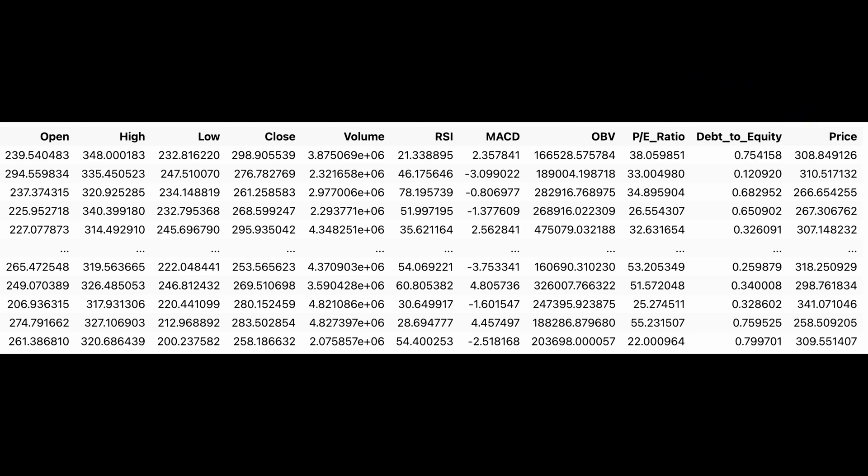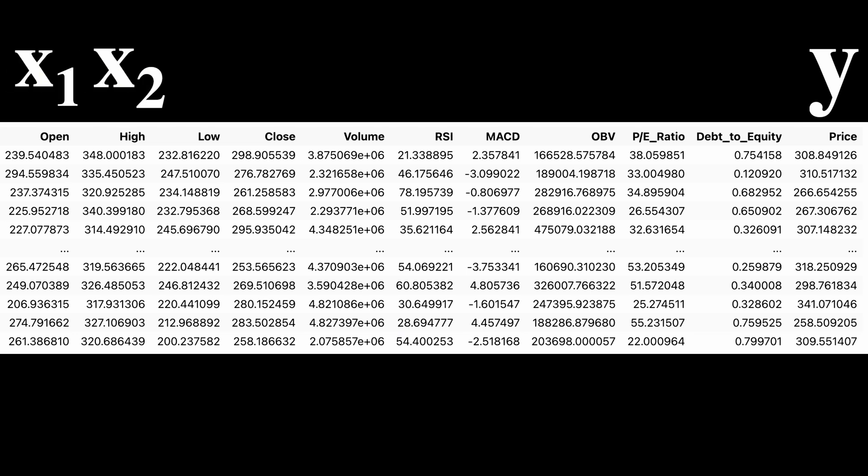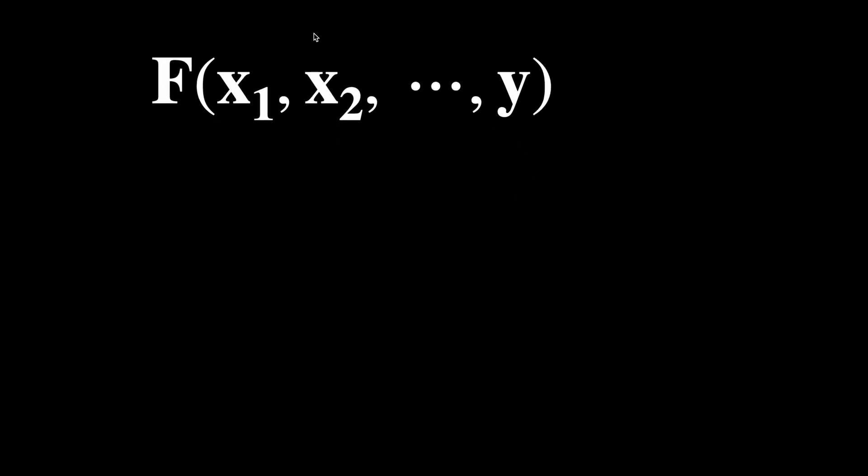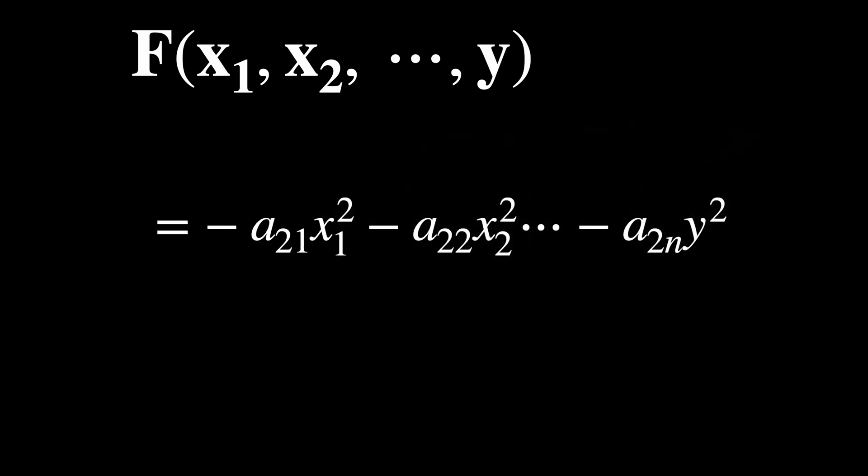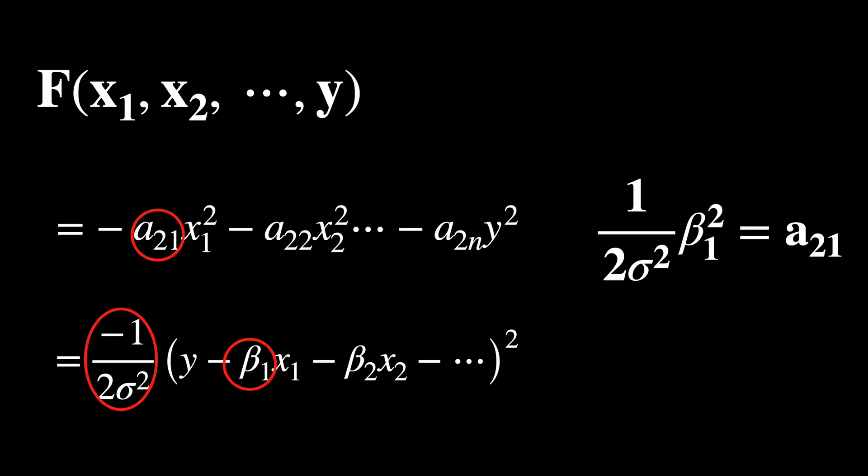So we call it the target variable. The rest of the variables are called the predictors because I want to use them to predict future prices. The predictors are sometimes also called features. The convention is to label the target variable with y and the predictors as x1, x2, etc. Now getting back to the Taylor series, I keep all the variable names as before except the last one—the target variable—which I now write as y. Now I factor the coefficient of y squared out and rearrange the terms in the following form.